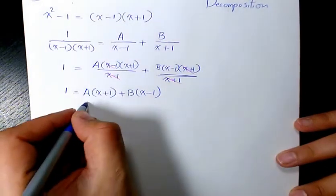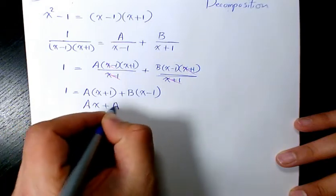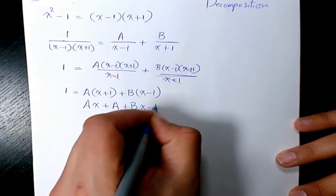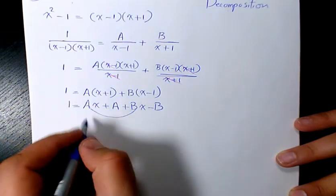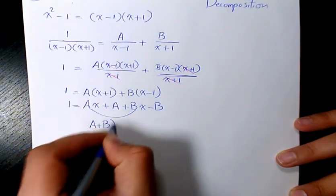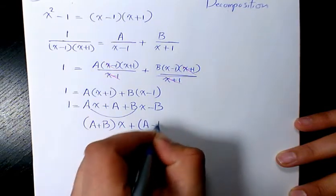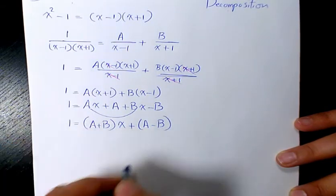So when you expand it, it's going to be A times x plus A plus B times x minus B equals 1. So when you factor this, you have A plus B times x plus A minus B equals 1.